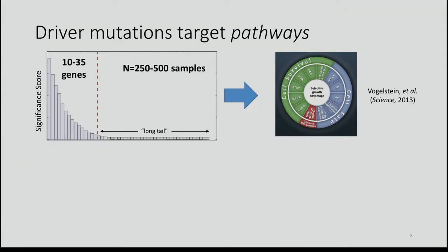As we've already heard, large-scale sequencing studies over the last decade or so have shown that there are relatively few statistically significantly mutated genes in moderately sized tumor cohorts, with a long tail of rarely mutated genes. This is a cartoon plot showing what you might find in a cohort of 250 to 500 tumor samples, corresponding with the observation that no two tumors are alike. One prominent explanation for this long-tail phenomenon is that mutations in cancer target pathways.